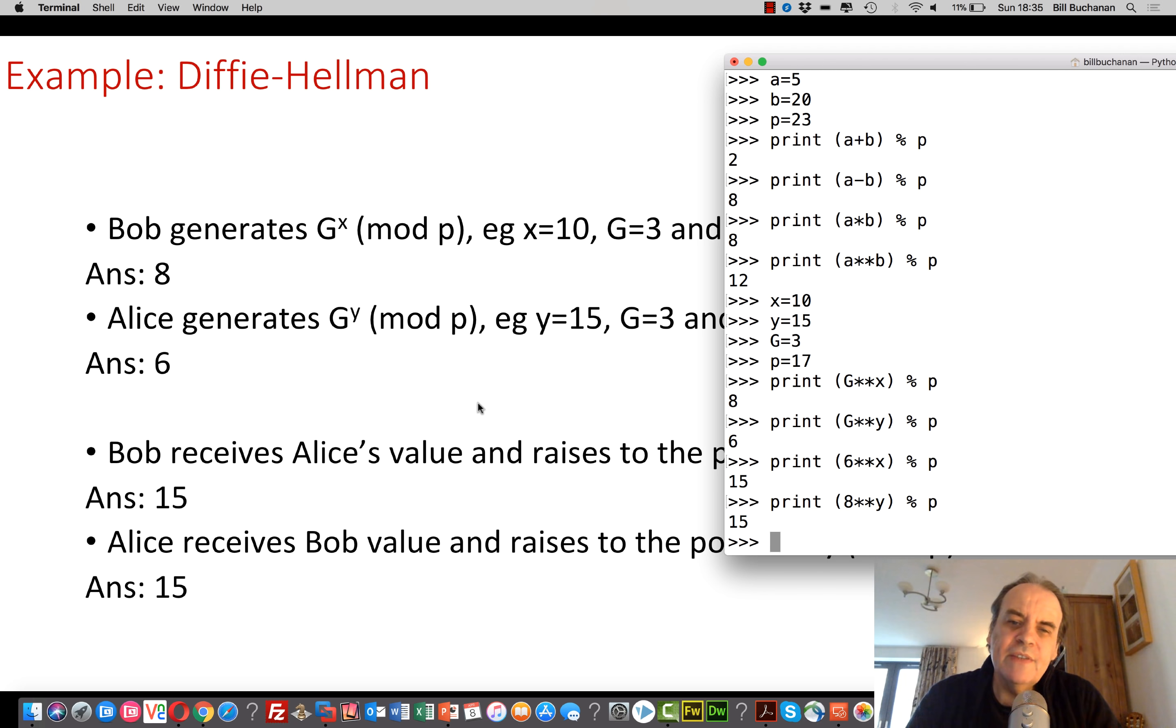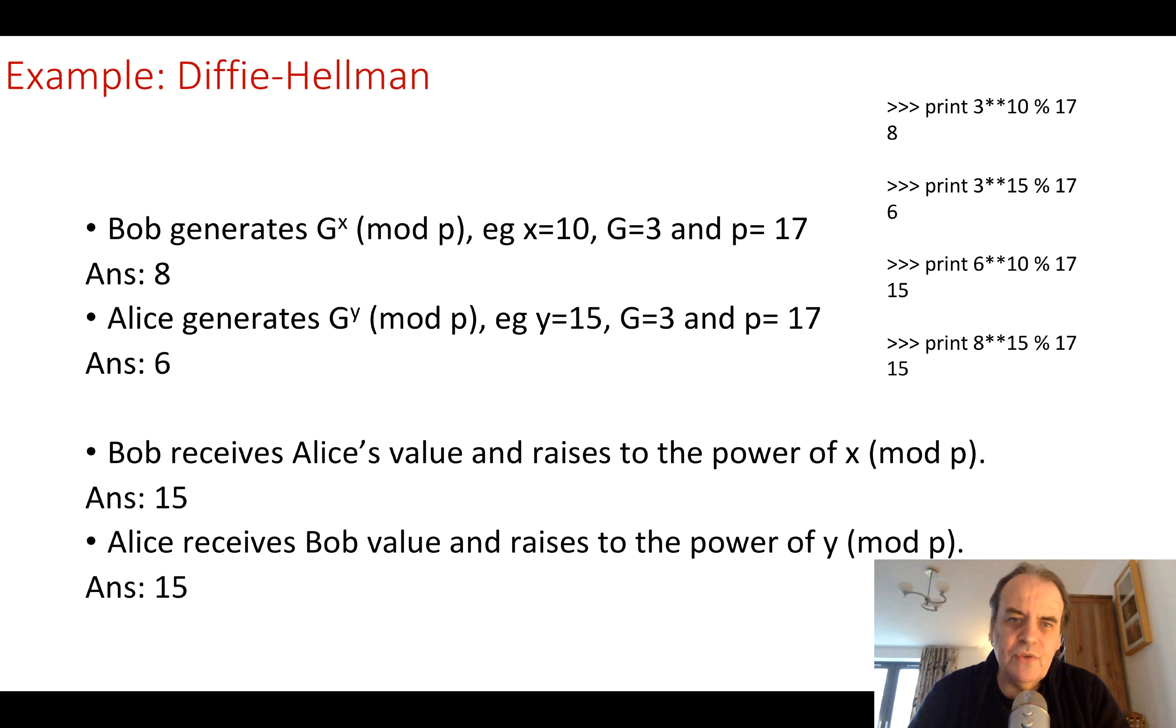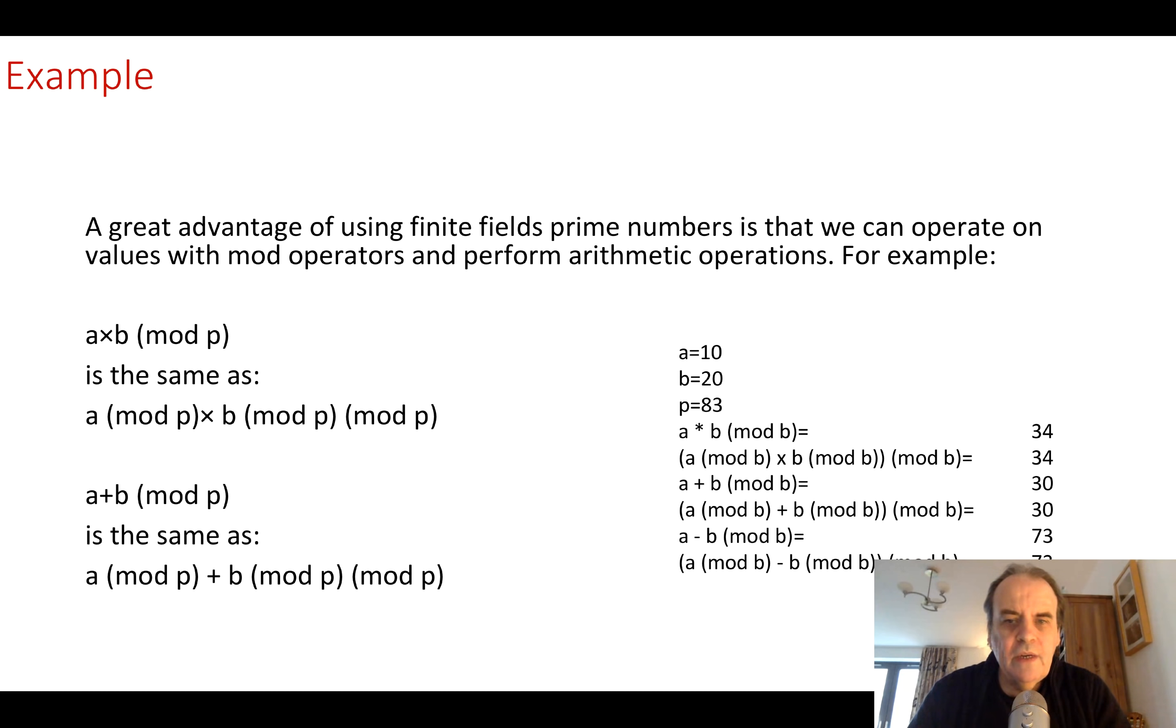And even though Eve is listening to the communication, she wouldn't be able to tell because of the discrete logarithm problem here. Obviously we're using very small values so it would be easy to tell. But if we use large values like 1024 bit prime numbers, it's actually very difficult to do this.